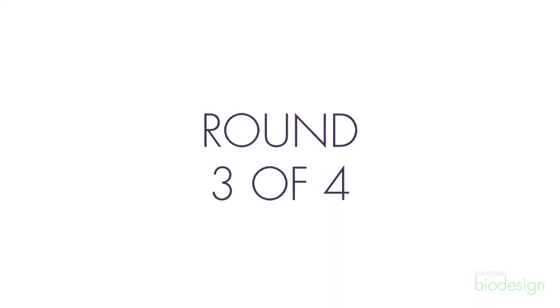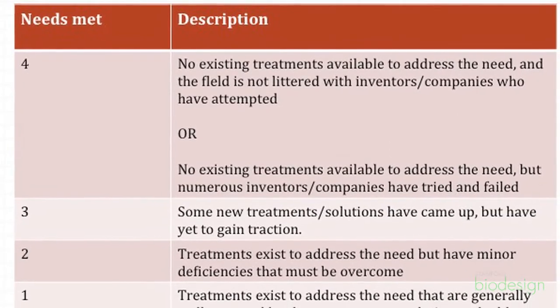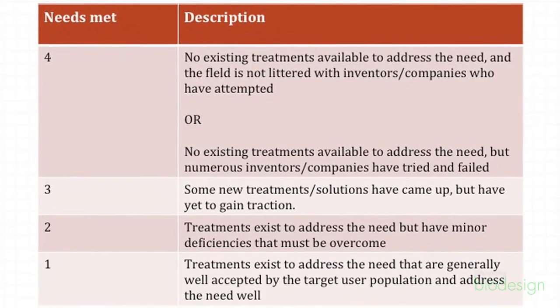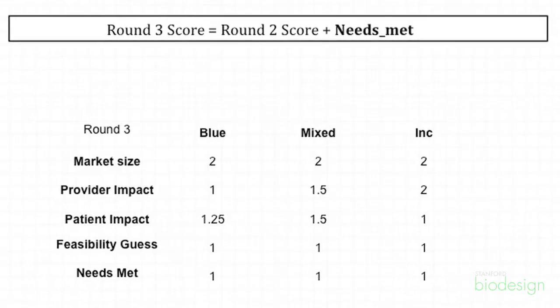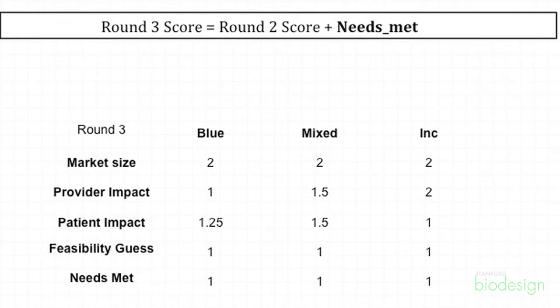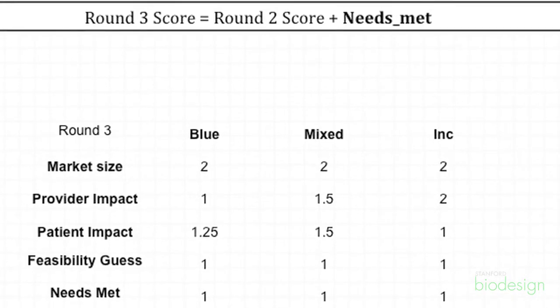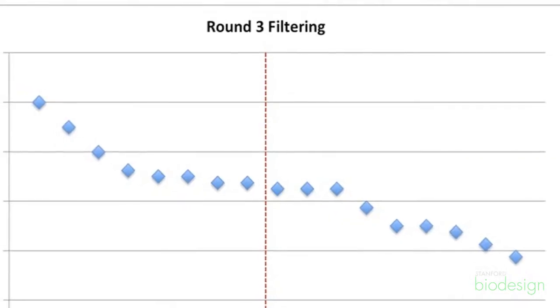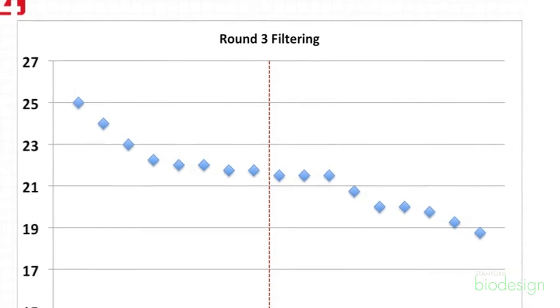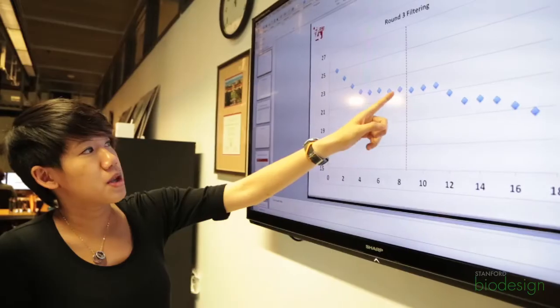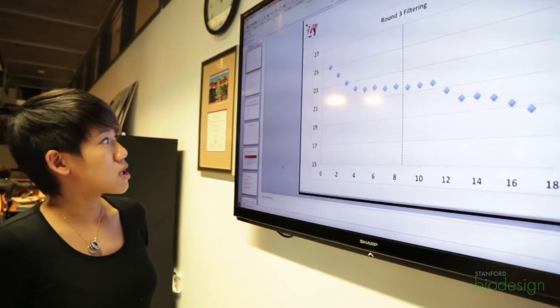In round three we added one more objective factor: needs met. We made a scoring system from one to four, where one means there are many solutions available in the market and four means there are no effective solutions. For blue sky, mixed, and incremental we applied an equal weighting of one. After plotting the graph again, we cut from 18 down to 8 needs, with the cutoff point at a slight drop in scores.